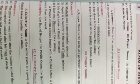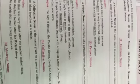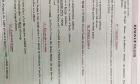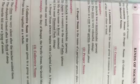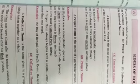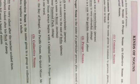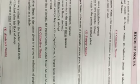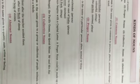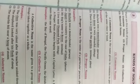They are Common Noun, Proper Noun, Collective Noun, Abstract Noun and Material Noun. Let's start with Common Nouns. A Common Noun is a name given in common to a person, place, animal or things of the same class or kind.